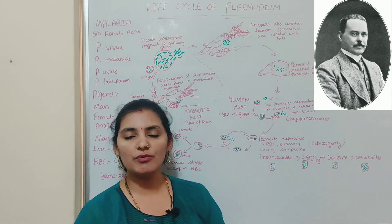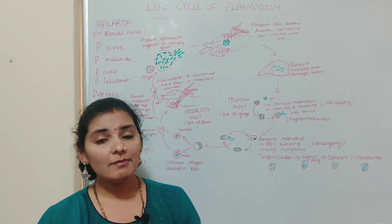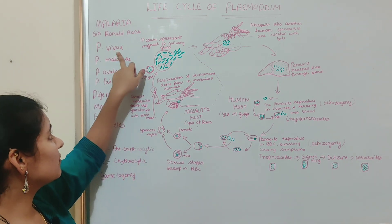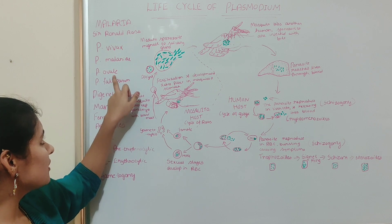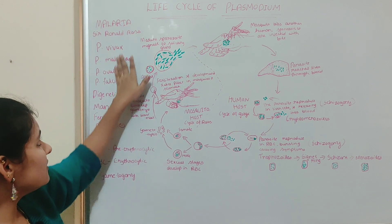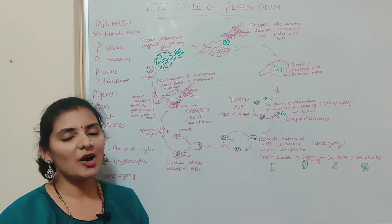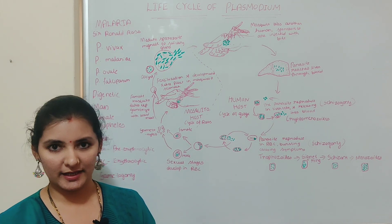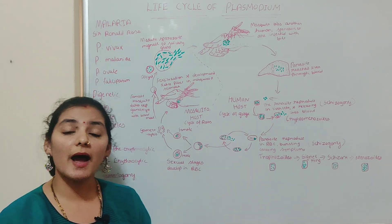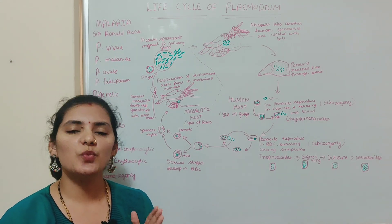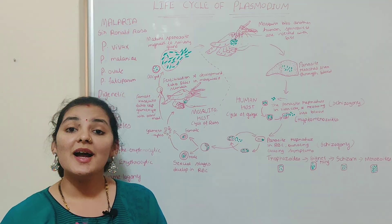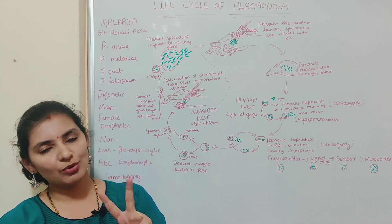Ronald Ross is the one who received a Nobel Prize for discovering the life cycle of Plasmodium. There are mainly four species of Plasmodium: Plasmodium vivax, Plasmodium malariae, Plasmodium ovale, and Plasmodium falciparum. All four species cause different types of malaria. Of these four types, Plasmodium falciparum causes malignant malaria, which is very dangerous and can even be fatal.